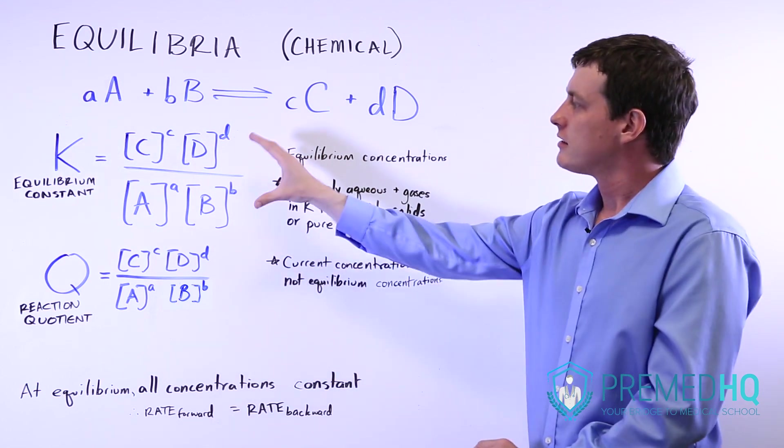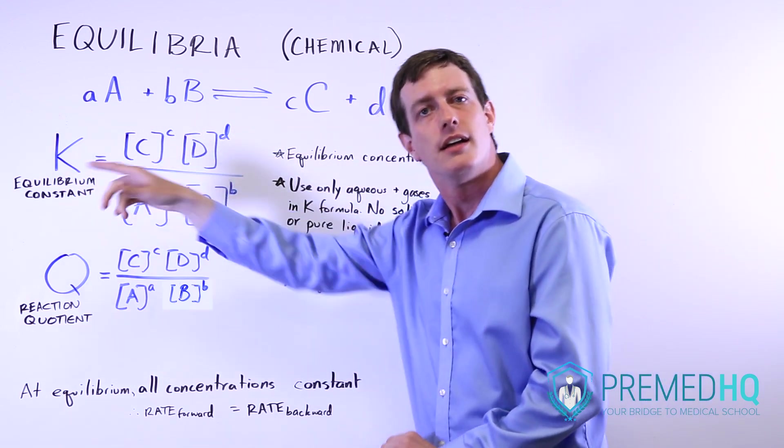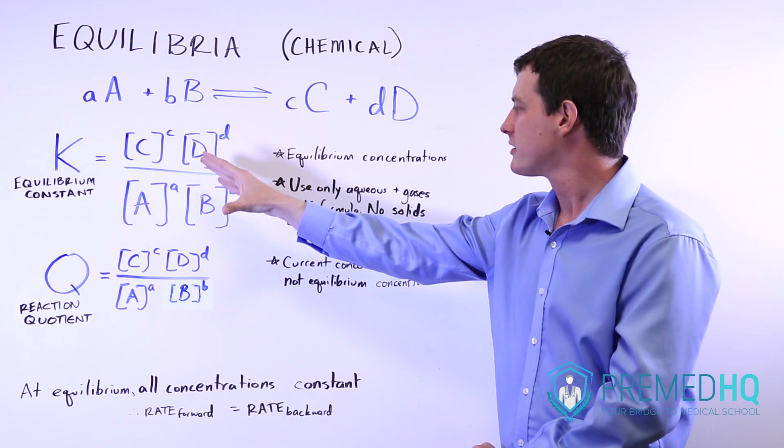The concentrations that are listed here are the equilibrium concentrations. In order to have this equal K, the reaction must reach equilibrium. And so these are equilibrium concentrations.